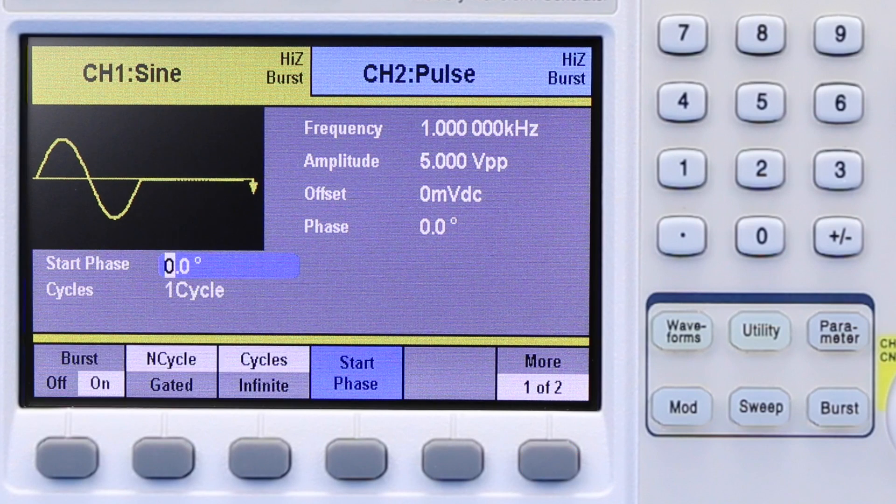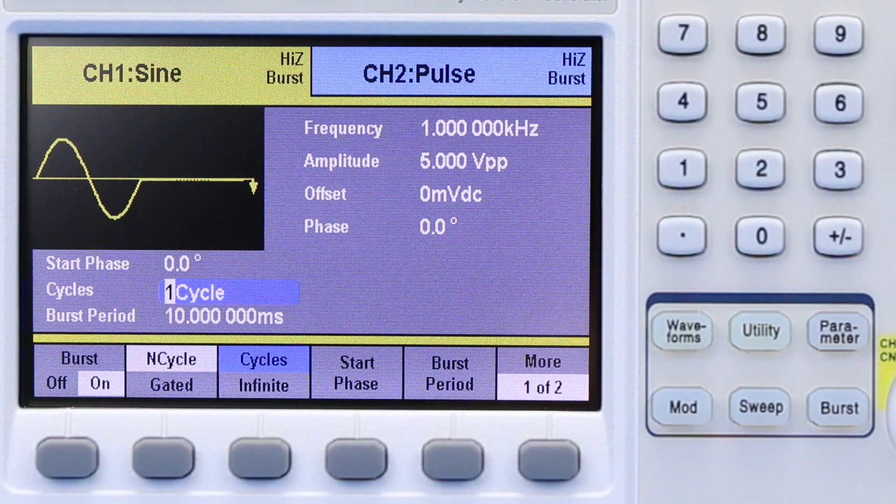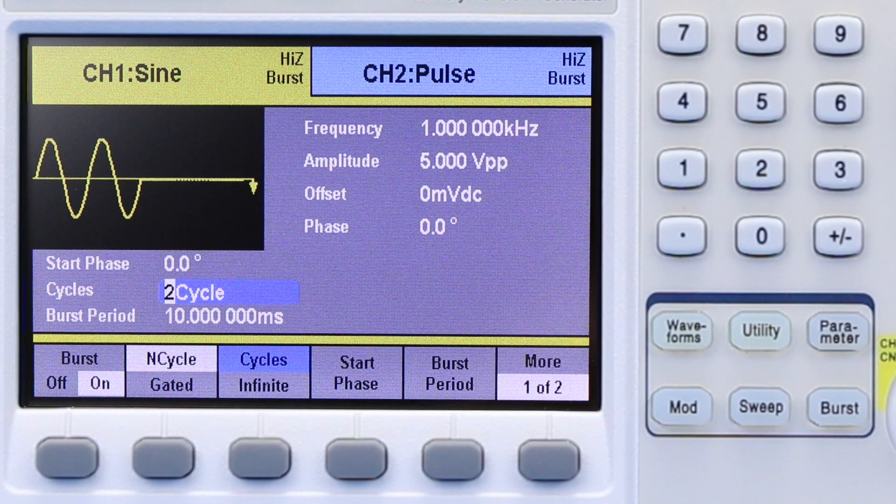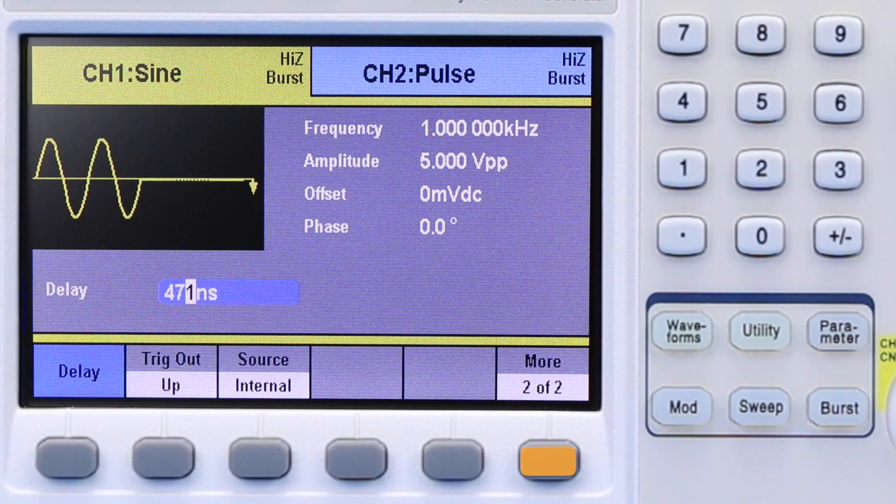To use a specified number of cycles to burst, make sure end cycle is selected. Then set the number of cycles desired and burst delay if needed. When the manual trigger button is pressed, the generator will output the burst mode waveform.